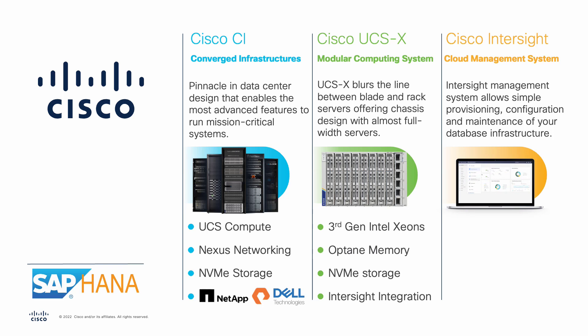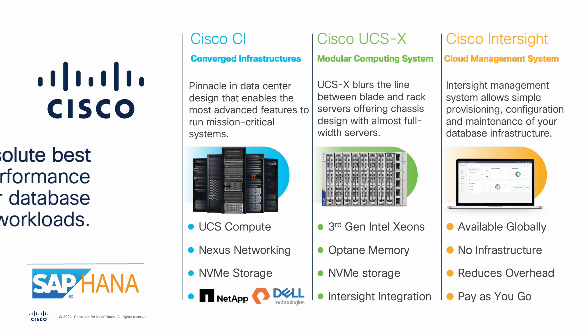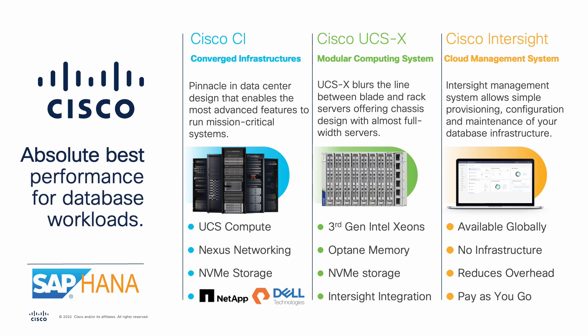The Cisco Intersight cloud management system is available globally and does not require any additional on-premises hardware, reducing management overhead and allowing you to focus on running your database workload. With Cisco Intersight and the Cisco CI systems, a pay-as-you-go approach can be taken, giving customers the flexibility necessary to adapt to their specific needs while always providing the absolute best performance for their database workloads, including SAP HANA.